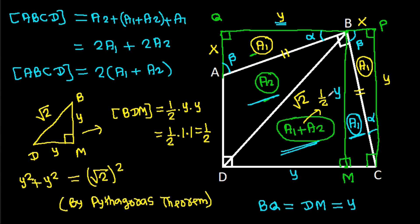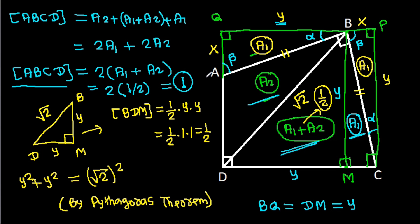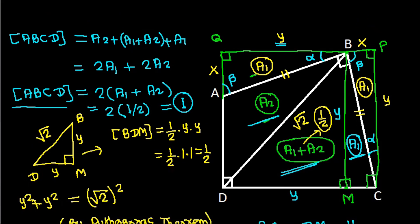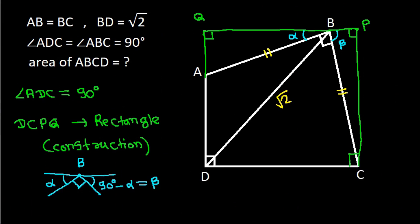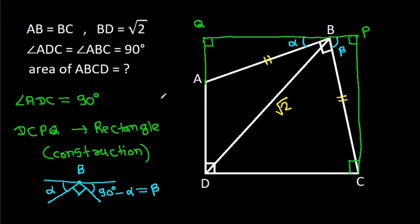So this area is 1/2. And we have area of ABCD equals 2 times (A1 plus A2) equals 2 times 1/2, which equals 1. So area of ABCD is 1.